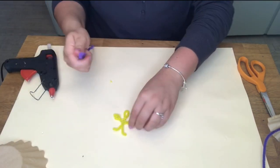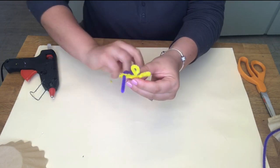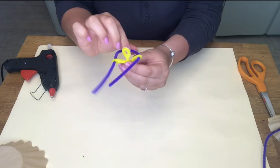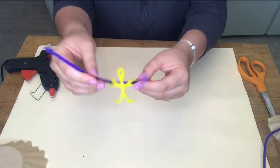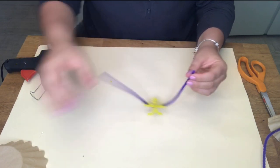So now take your other pipe cleaner that's going to be the string that connects our parachute. So all you're going to do is thread it through the hands of our Parachute Man. And now this is the string that will connect to our coffee filter.